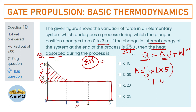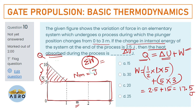Total work done = 2.5 + 15 = 17.5 J (in Newton-meters, which equals joules). Heat absorbed = ΔU + W = 2.5 + 17.5 = 20 J. The right option is option C.